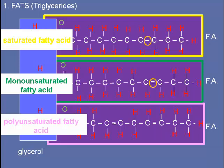The third fatty acid is a polyunsaturated fatty acid, with two double bonds between carbons — meaning two locations where you could potentially add more hydrogen. The word 'poly' means many, so in the context of fatty acids, there is more than one location with double bonds between carbons, meaning it's unsaturated in more than one location.